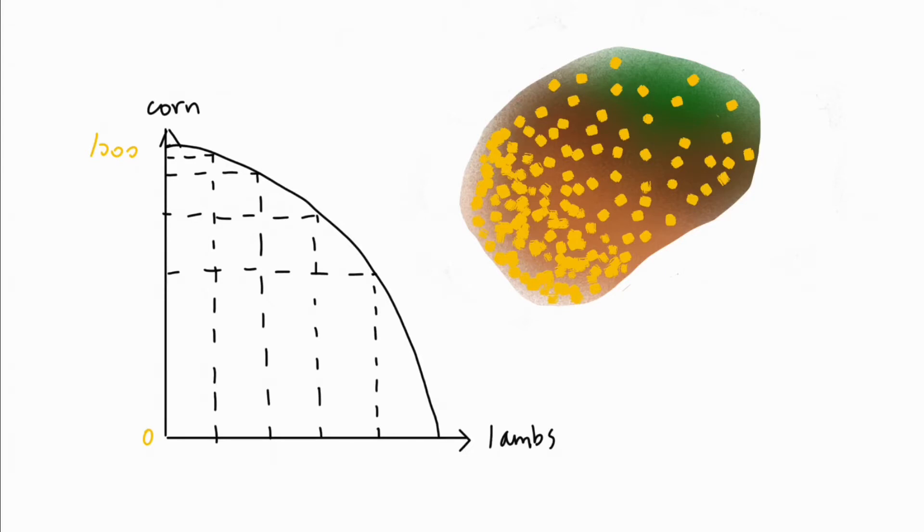Now, we need to be aware that this land isn't equally suitable for growing corn and grazing lambs. The green parts have plenty of grass for lambs to eat, but perhaps the soil there isn't really right for corn to grow. So naturally, we decided to graze our first hundred lambs in the green area, where it's not so great for the corn anyways.